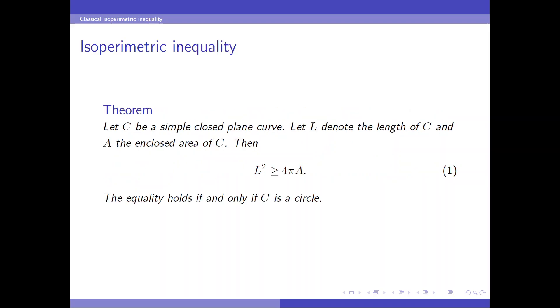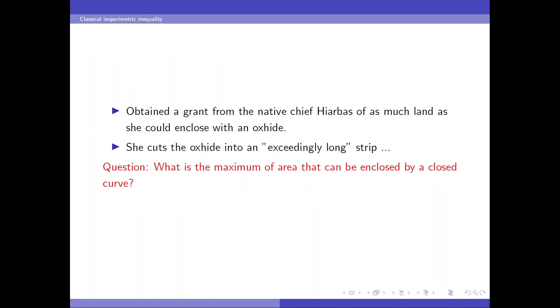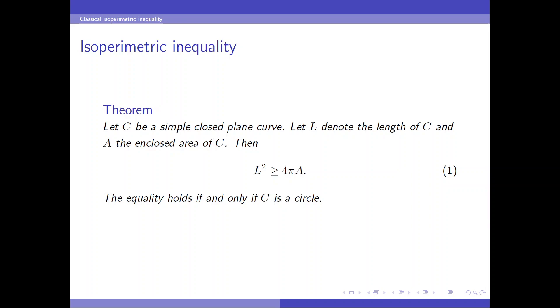The answer is the isoperimetric inequality. Suppose we have a simple closed curve in the plane and let L denote the length a, the enclosed area. Then we have L squared is greater than or equal to 4 pi a. And the equality holds if only c is a circle.